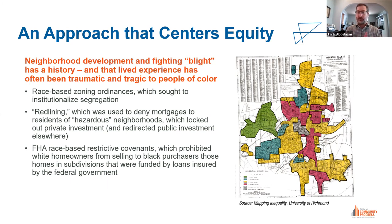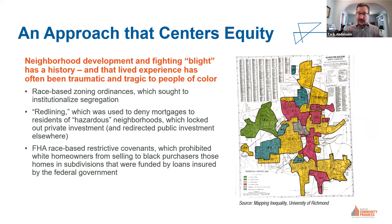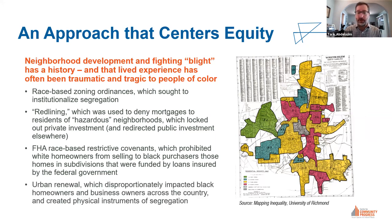The government would also only ensure large development loans if the developer agreed to include race-based restrictive covenants on each home, basically prohibiting those homes from being sold to Black purchasers. Those two federal policies locked folks into neighborhoods that were then denied investment and experienced concentration of poverty, while simultaneously denying them access to neighborhoods of opportunity. And finally, urban renewal — a lot of communities can point to neighborhoods that were decimated, work that disproportionately impacted Black homeowners and business owners across the country and literally created physical instruments of segregation.